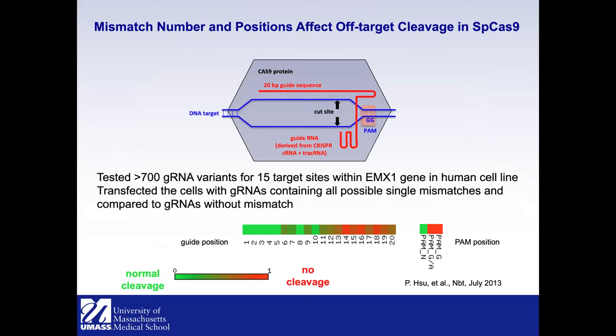Efficacy is only one side of the story; you also have to think about off-target effects. Zang's lab studied off-target effects by testing about 700 guide RNA variants with 515 target sites. They mutated the guide RNA with one mismatch in all different positions and found that not only mismatch number but also mismatch position affects off-target cleavage. They also discovered that NAG has reduced cleavage compared to the preferred NGG PAM.